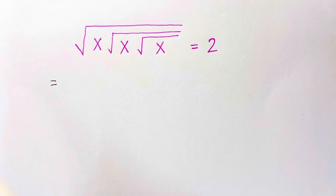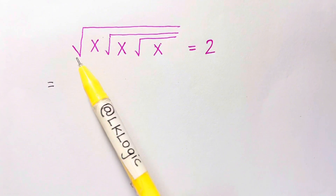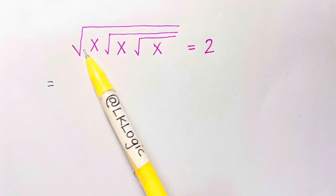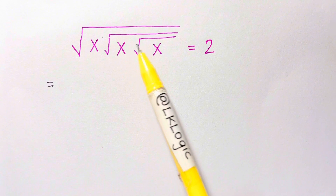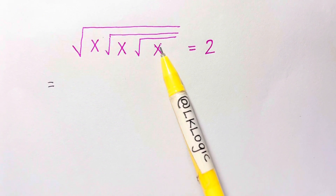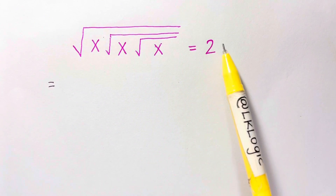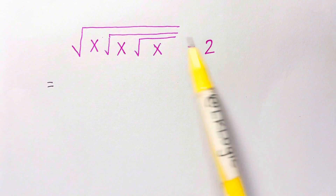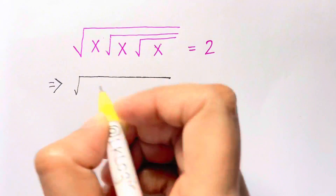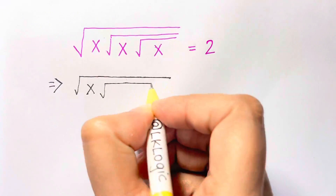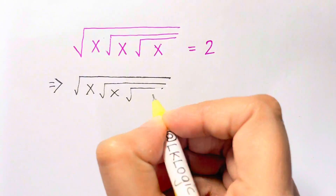Hi guys, I have a lovely tricky radical problem. Square root of x, root of x, root of x equals 2. We have to find the value of x, and then let's check if that is right or not.